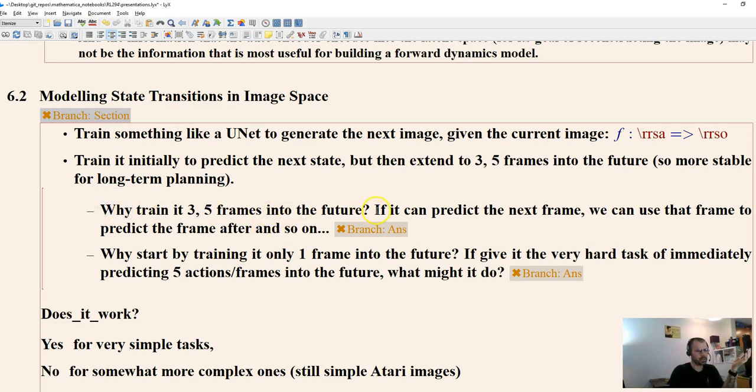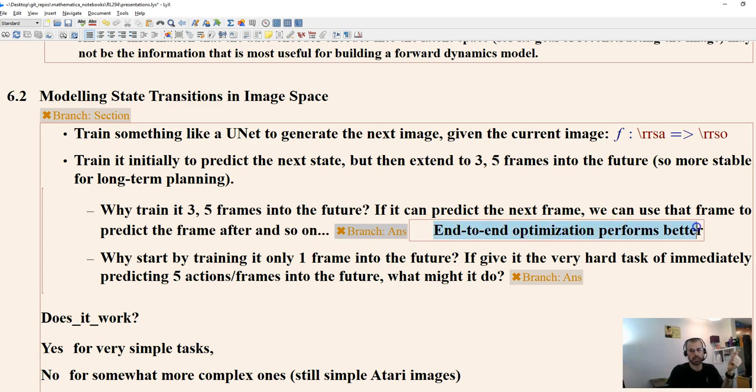So why train it for three to five frames into the future if it can predict the next frame, and then we could use that prediction of the next frame to predict the frame after, and so on? Why do we want to all at once learn to predict three to five frames into the future? Well, basically, end-to-end optimizations tend to perform better. That's why neural networks overall work really well for lots of tasks, whereas hand-engineering doesn't work as well. So if you just predict a single frame into the future, then there's going to be some error in that. And then when you predict the next frame into the future, you're using a model that hasn't been trained on how to make predictions using previous input that includes error. So now we're doing end-to-end training where we learn to handle this error better to make multi-step predictions.